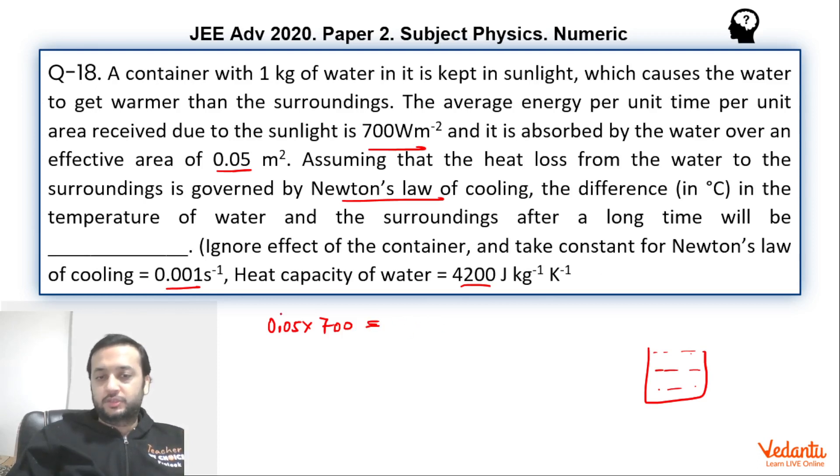So this is DQ in by DT and will be equal to DQ out by DT. DQ out by DT can be written as mass which is 1 kg into specific heat which is 4200 into DT by DT. Now you remember DT by DT can be written as constant into temperature difference by Newton's law of cooling. So DT by DT can be written as constant. What is constant? This constant 0.001 into delta T.